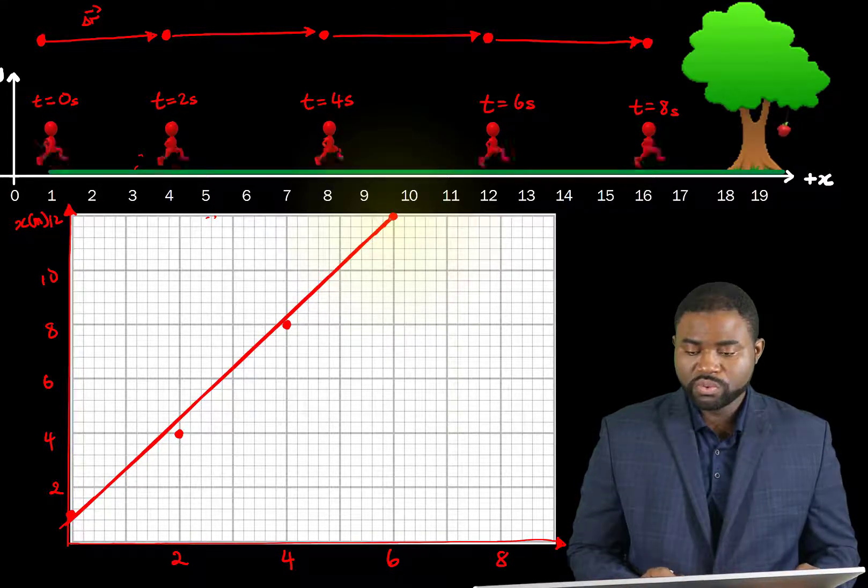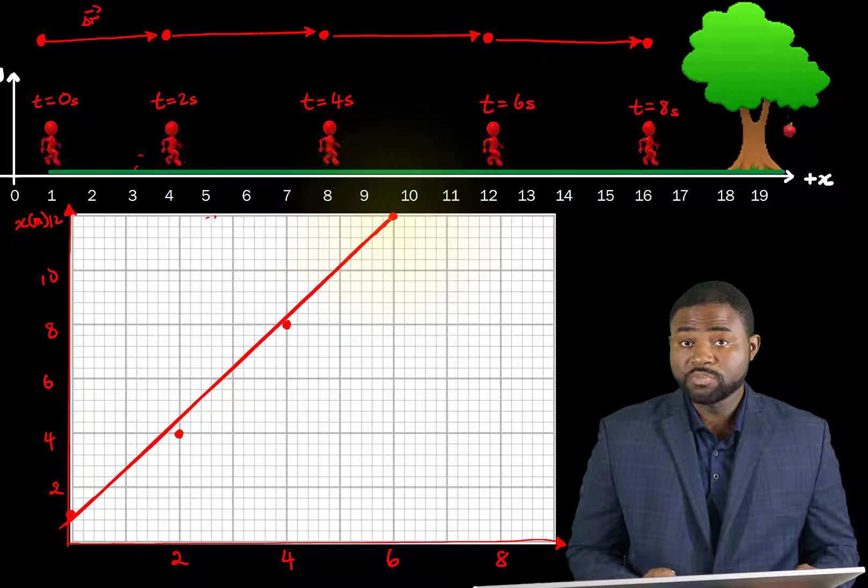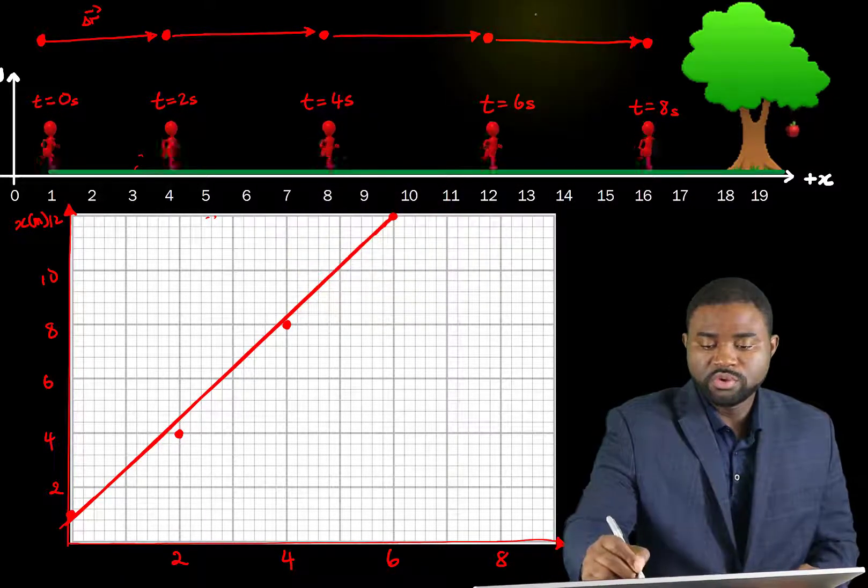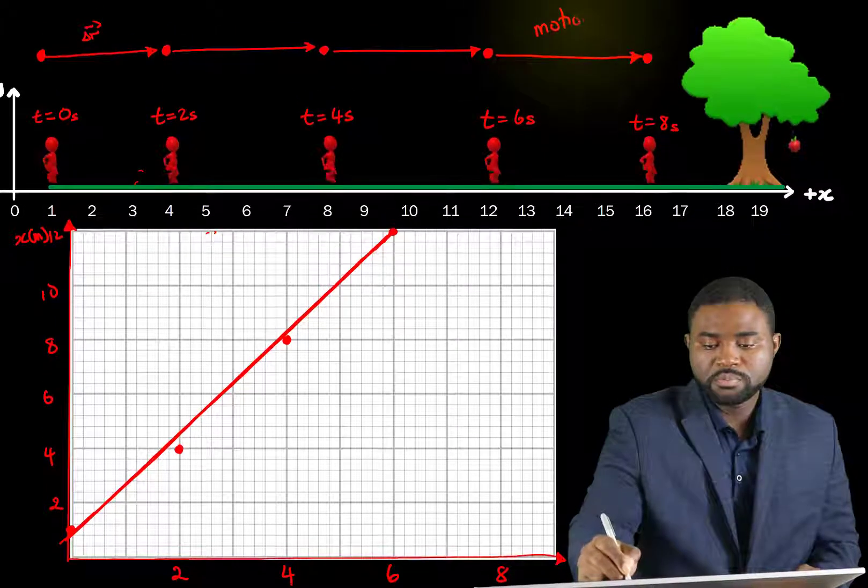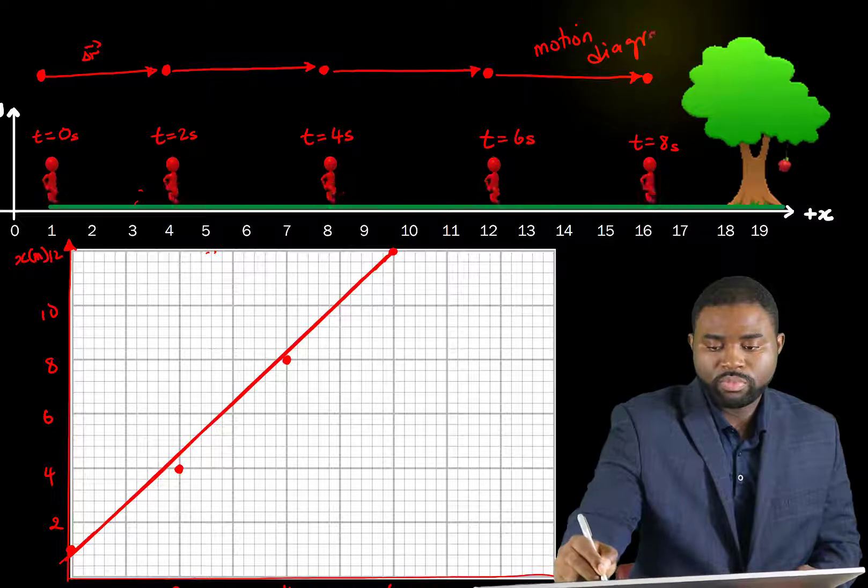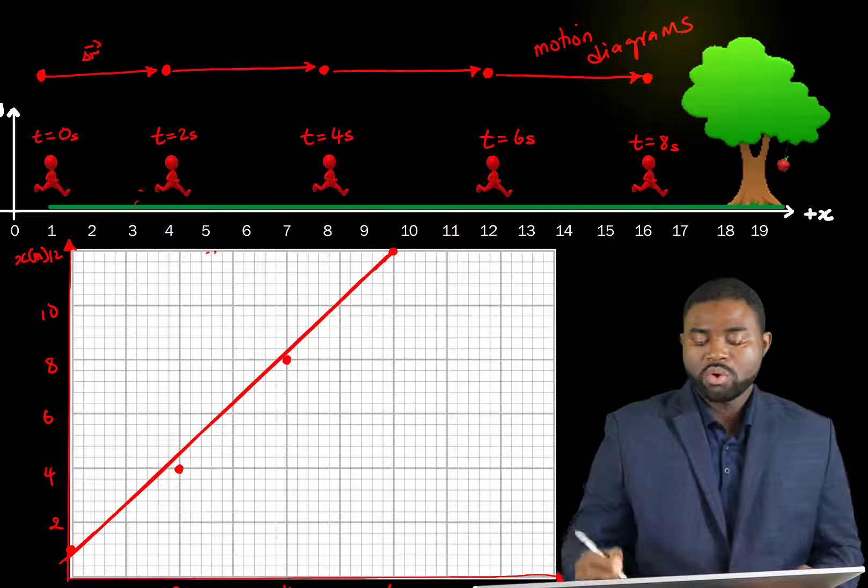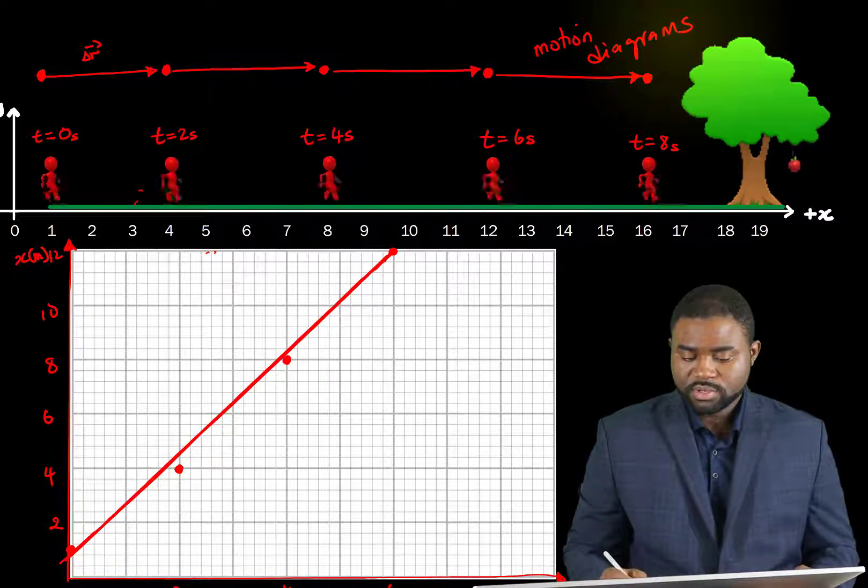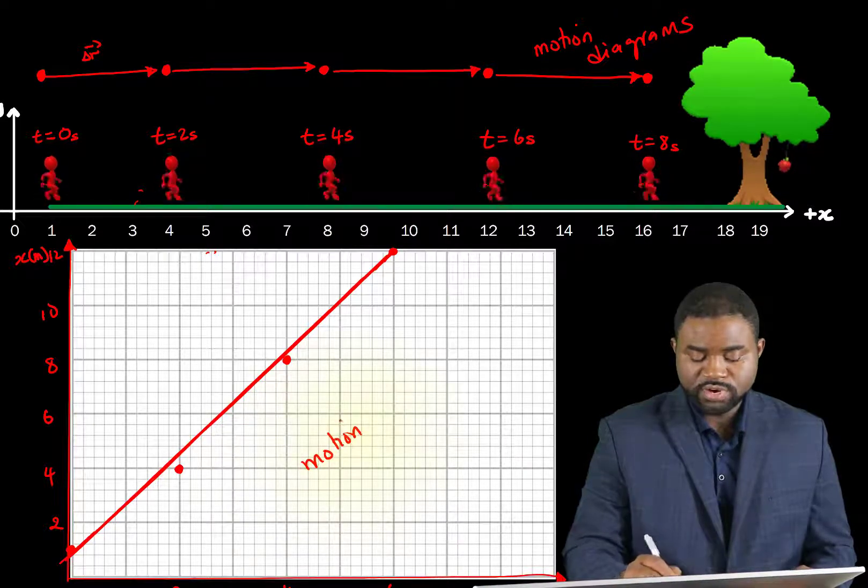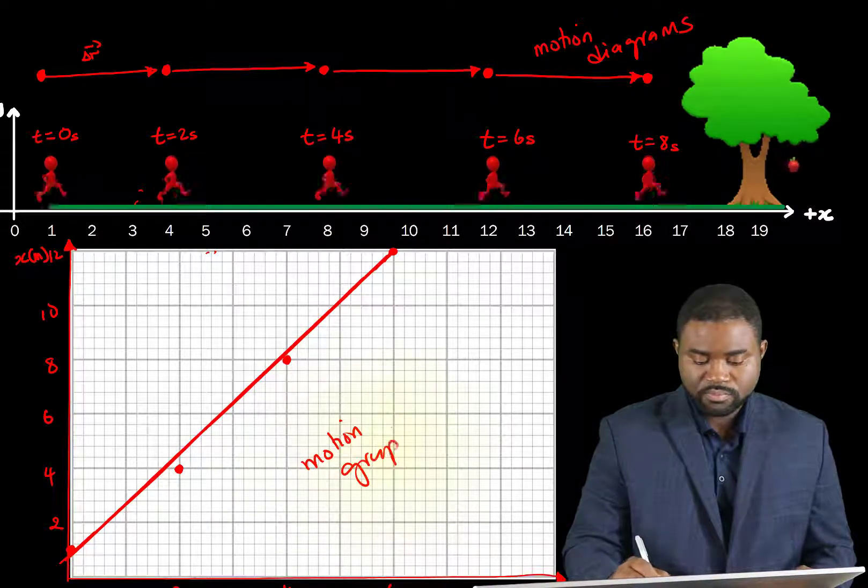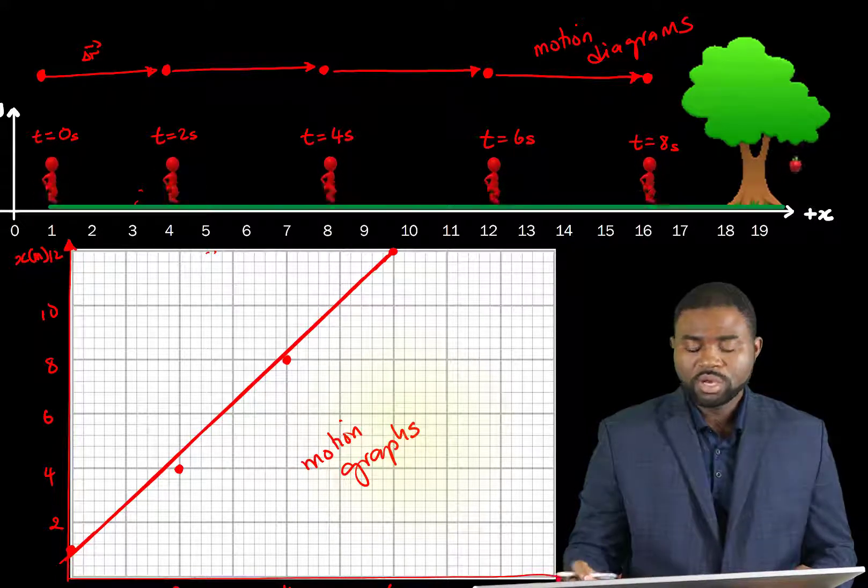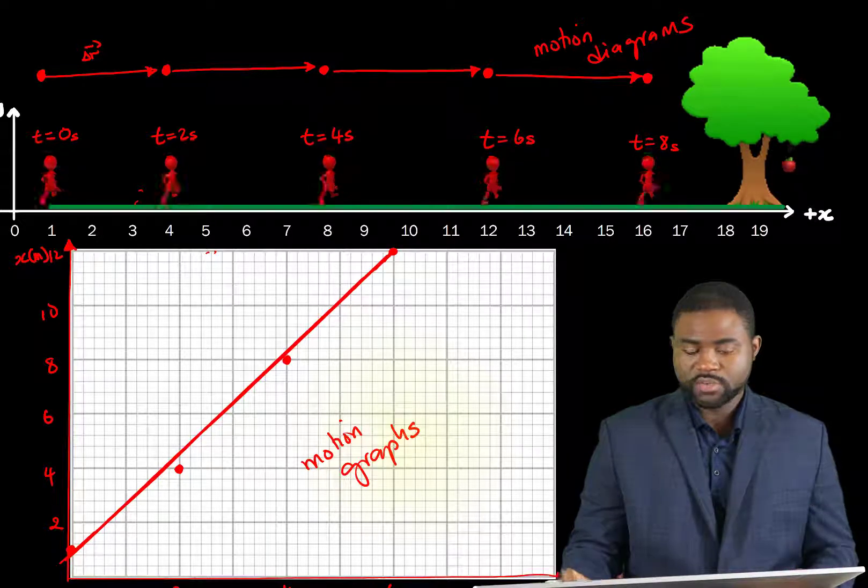So we have seen two ways by which we can actually represent the motion of an object. We can represent the motion of an object using motion diagrams, or we can represent the motion of an object using motion graphs, and both will come in handy.